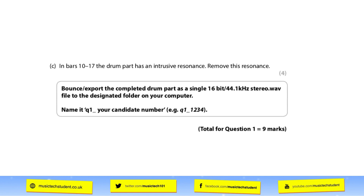The final question asks you to correct something from the actual part — in this particular instance, you just have to remove a little bit of EQ resonance. Once you've done that, you then have to export this particular question as Q1 and your candidate number. Make sure you get your region set up — if it asks you to export between one second and 15 seconds, make sure your region is set up to export only the right amount, and make sure you're only exporting the channel they're asking for.